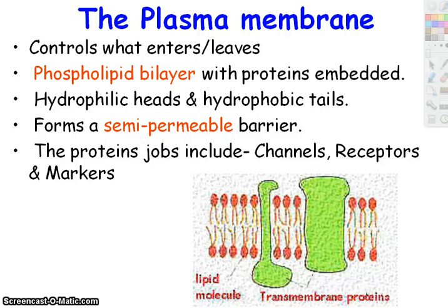Another thing proteins can do is be receptors. For example, a hormone can attach to a membrane protein and send a message inside — like someone at the door who can't come in but can give you a message to pass along. Lastly, proteins can be ID markers. That's why you can't just give anybody your kidney — your body would probably reject it, because we all have different ID markers identifying what belongs. When looking for donors, they look for tissue match — similar ID markers — and also give drugs to lower immune response to prevent rejection. Often a sibling can donate because they have similar ID markers.